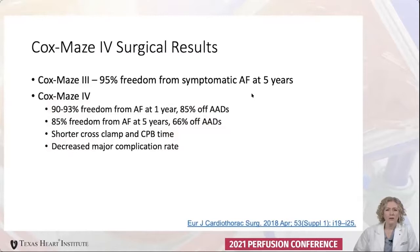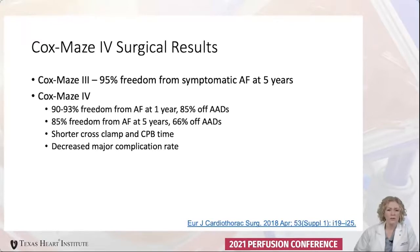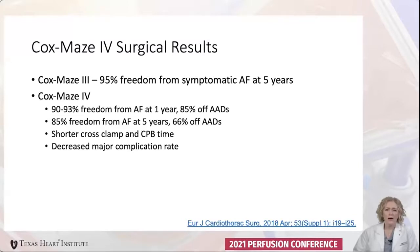Dr. Ralph Damiano et al. did a review of Cox-Maze 3 and Cox-Maze 4 studies in 2017, comparing these two treatments and their results for AFib. The Cox-Maze 4 has similar results at one year, but actually lower freedom from AFib at five years compared to Cox-Maze 3. One explanation is that older Cox-Maze 3 studies may not have had as accurate follow-up methods. However, both are still considered excellent treatment for AFib and the gold standard.